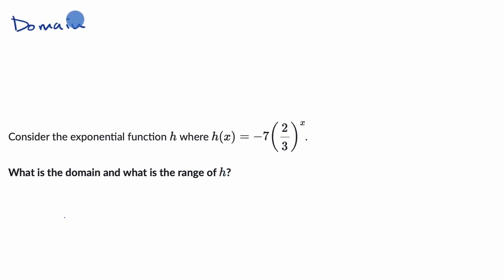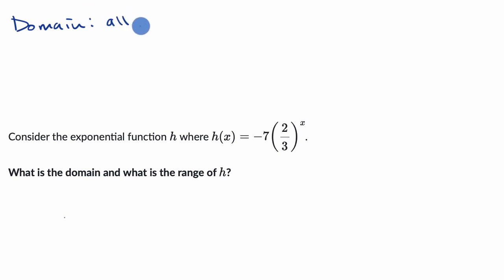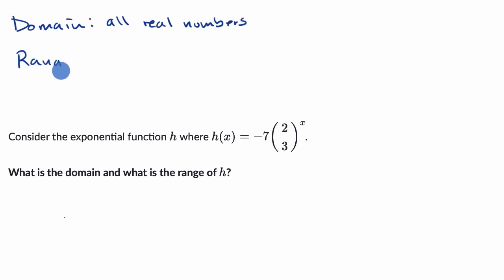Let's start with the domain. What are all of the x values where h of x is defined? I could put any x value here — any negative value, what happens when x equals zero, any positive value. So once again, our domain is all real numbers for x. Now, what about our range?